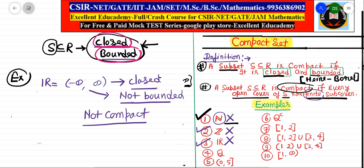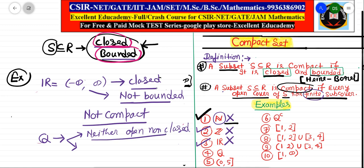Fourth example: the set of rational numbers. The set of rational numbers is neither open nor closed, as we saw in the last lecture, so it fails the first property. It is also not bounded. Since it is not closed and not bounded, the set of rational numbers is not compact.